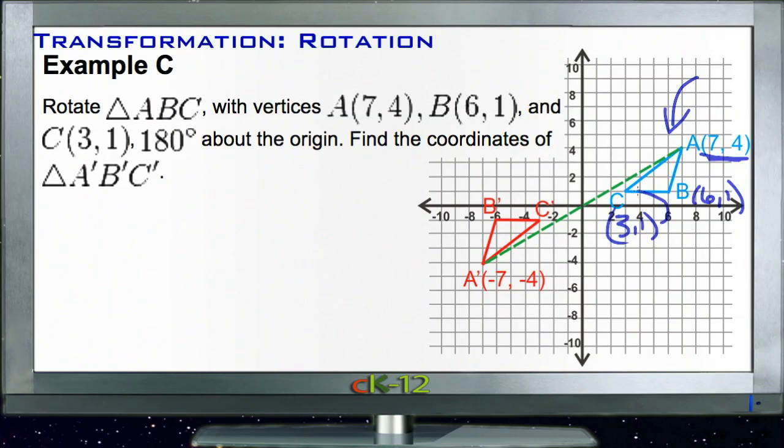So we can take that triangle and then rotate it 180 degrees and find the coordinates of A prime, B prime, C prime. Well, that's actually a lot easier than it looks because if point A is 7, 4, and point B is 6, 1, and point C is 3, 1,